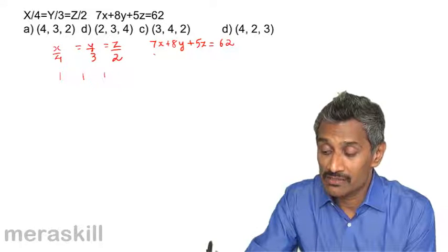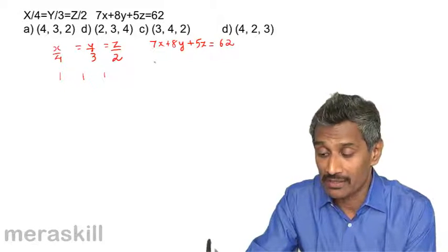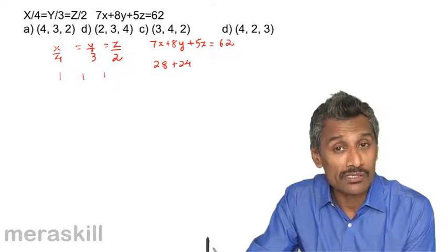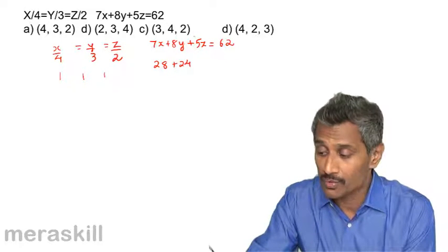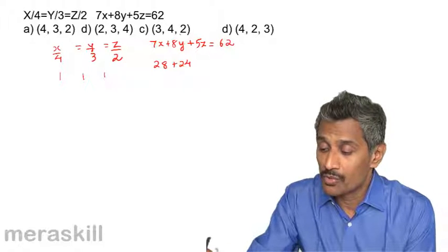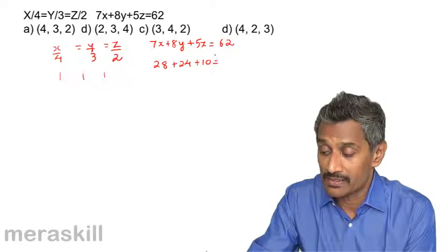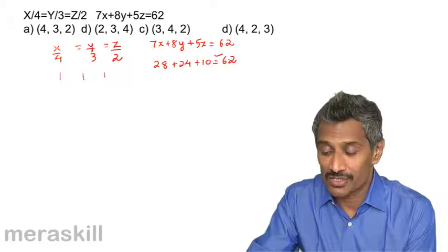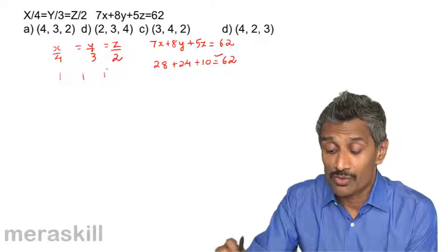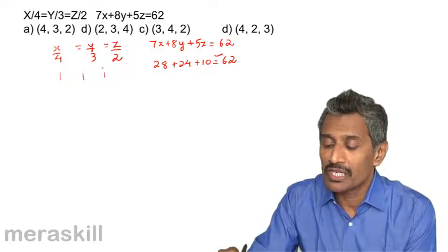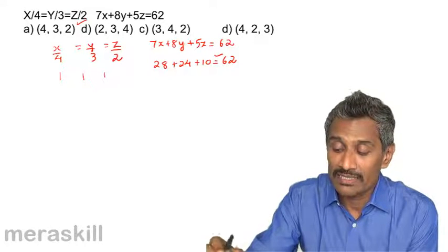Now let us check whether it satisfies the second condition. 7×4 = 28, 8×3 = 24, and 28 + 24 = 52. Then 2×5 = 10, giving 62. So yes, it is equal to 62. Hence we get it that way — by substitution, we get this as the right answer.